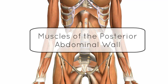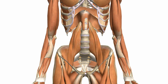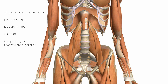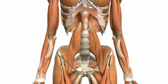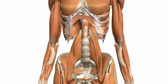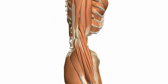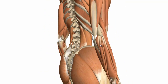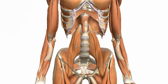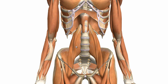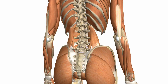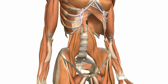This tutorial is on the muscles of the posterior abdominal wall. There are five muscles to know: the quadratus lumborum, the psoas major and minor, the iliacus, and the diaphragm. The psoas major and minor sit medially, the iliacus is inferiorly, the diaphragm sits superiorly at the top, and the quadratus lumborum sits posteriorly and laterally. The anterior abdominal muscles and back muscles have been removed so we can view these posterior abdominal walls quite nicely.